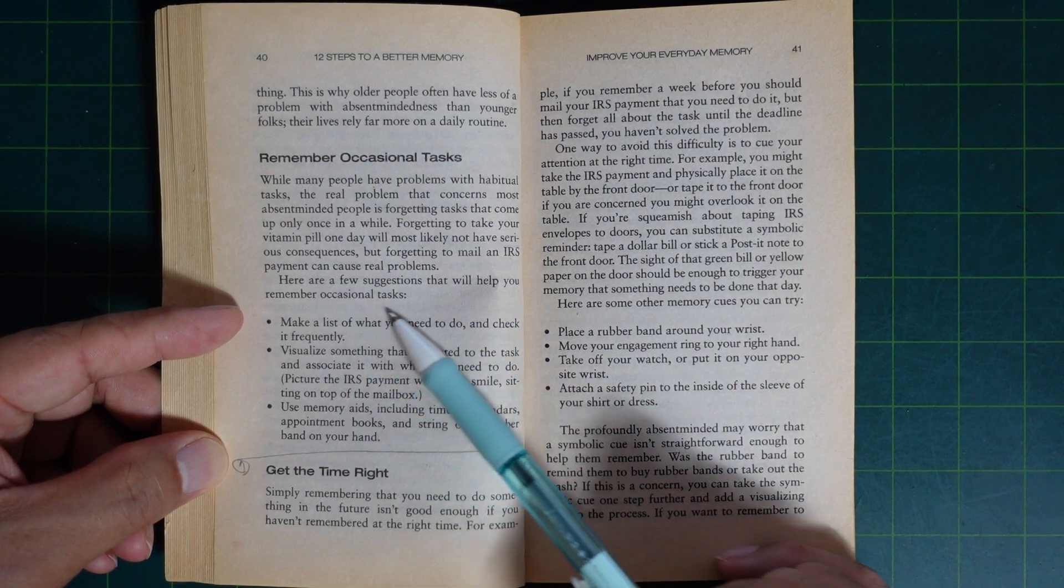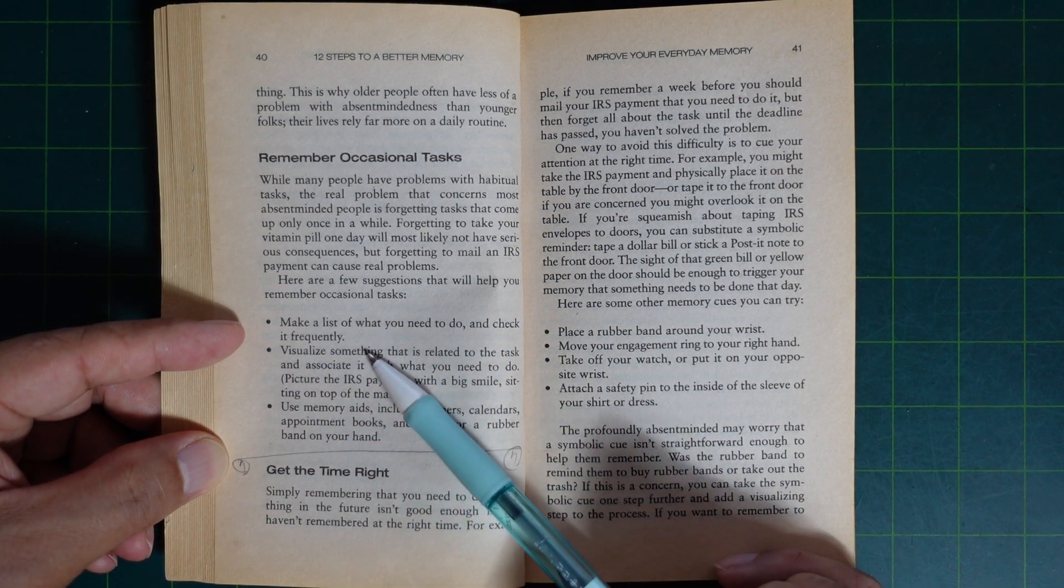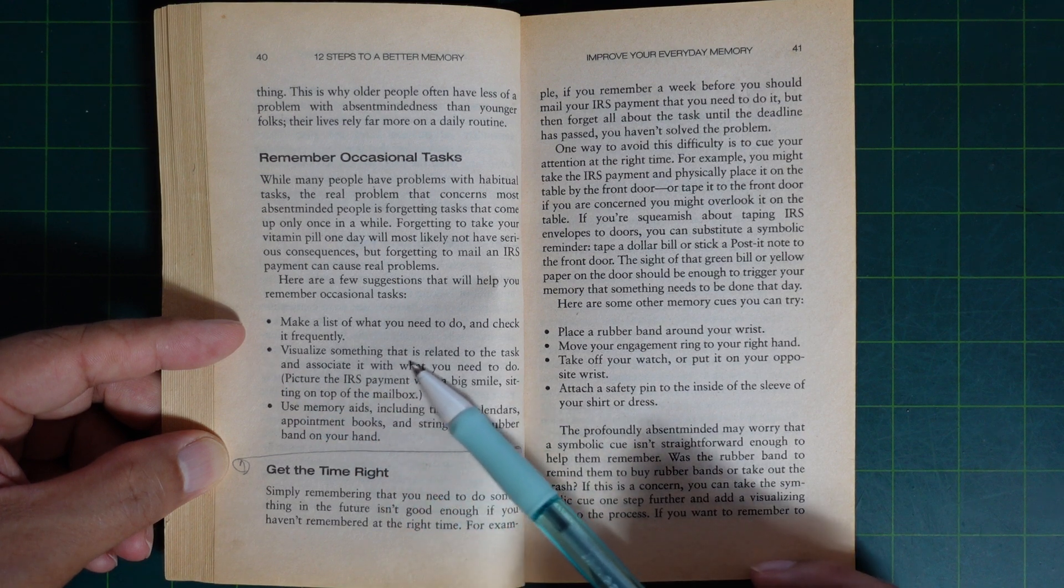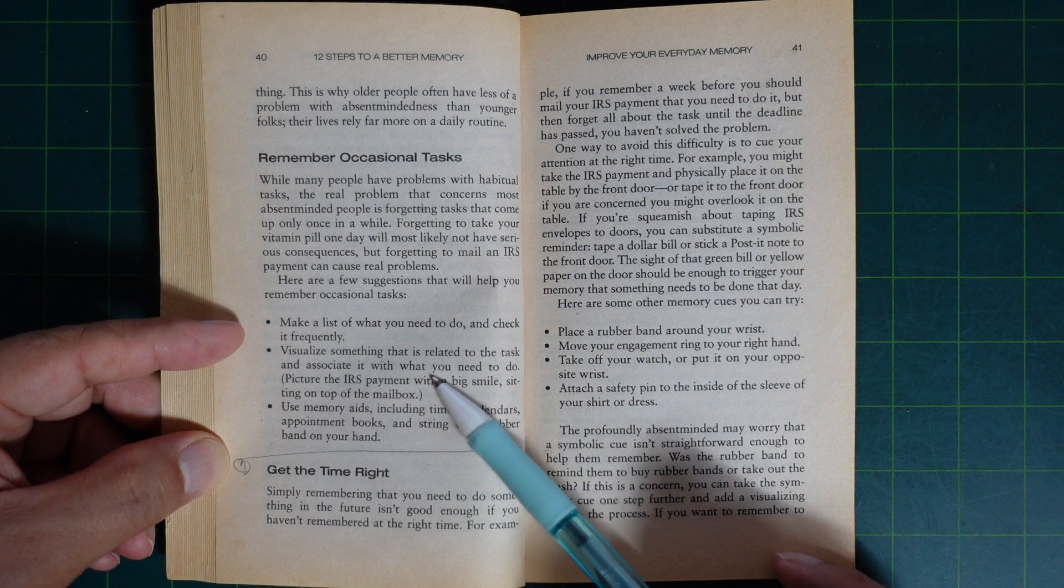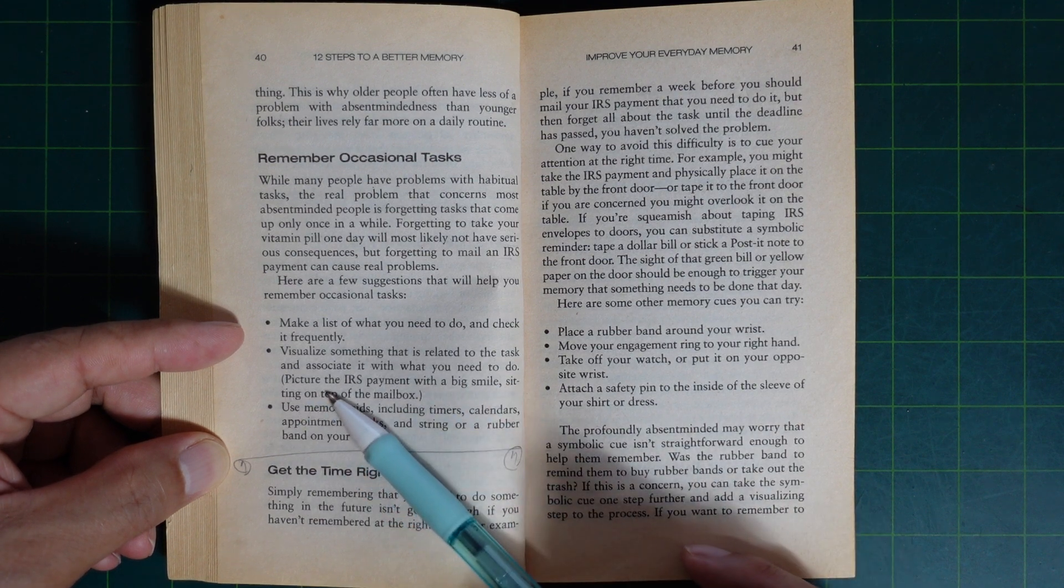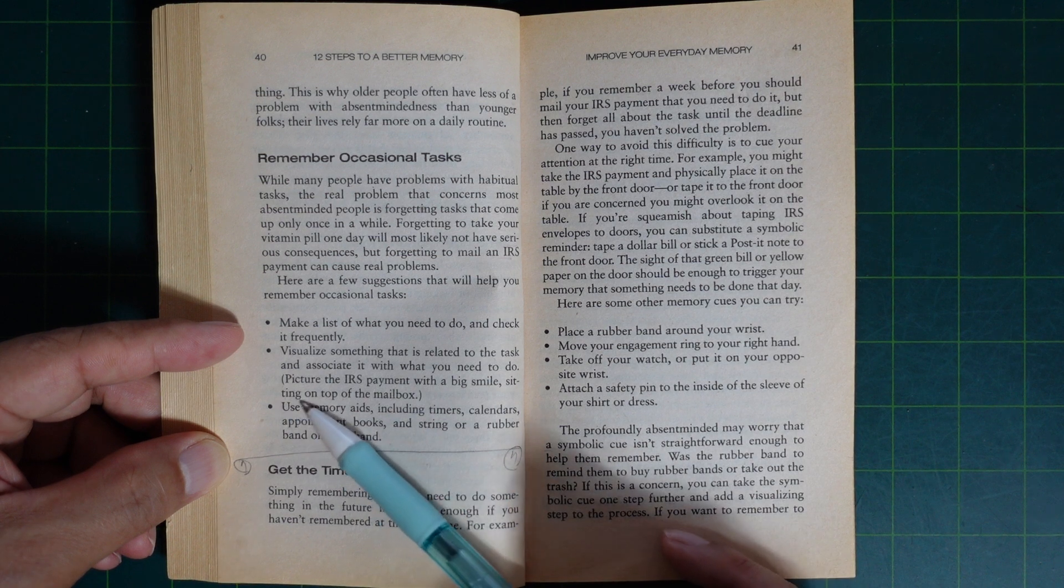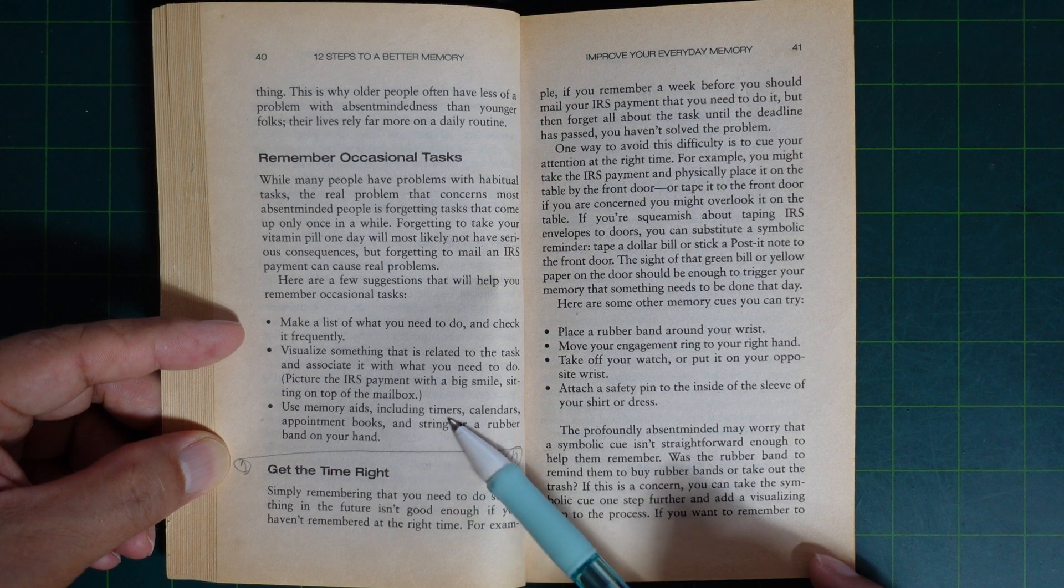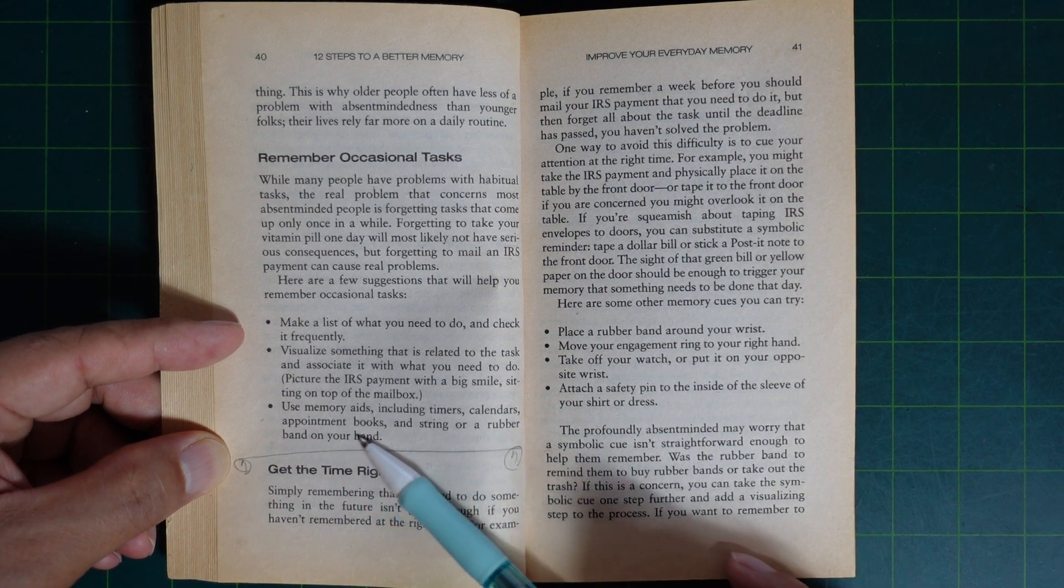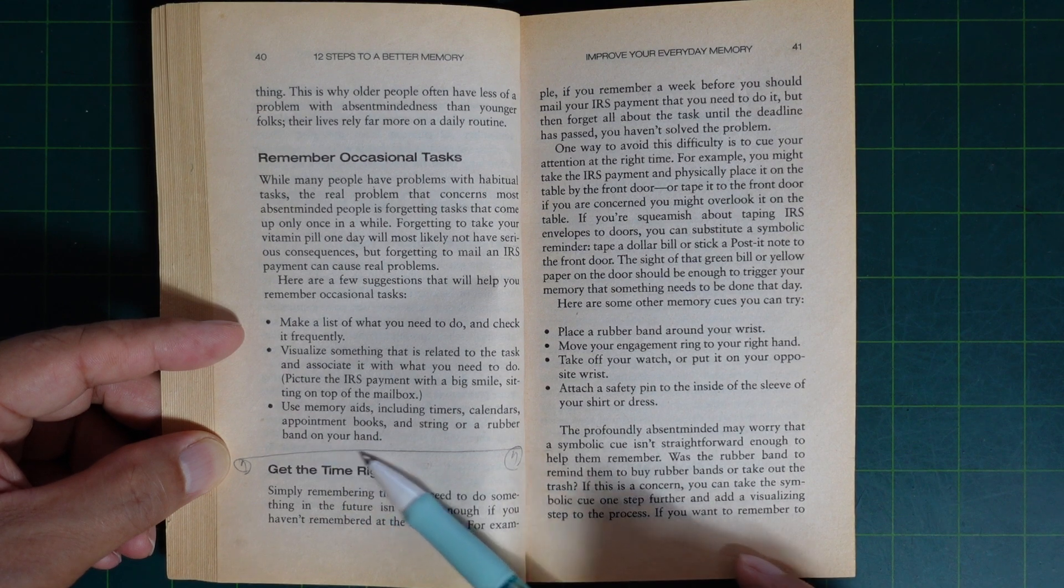Here are a few suggestions that will help you remember occasional tasks. Make a list of what you need to do and check it frequently. Visualize something that relates to the task associated with what you need to do. Picture the IRS payment with a big smile sitting on top of the mailbox. Use memory aids including timers, calendars, appointment books, and string or a rubber band on your hand.